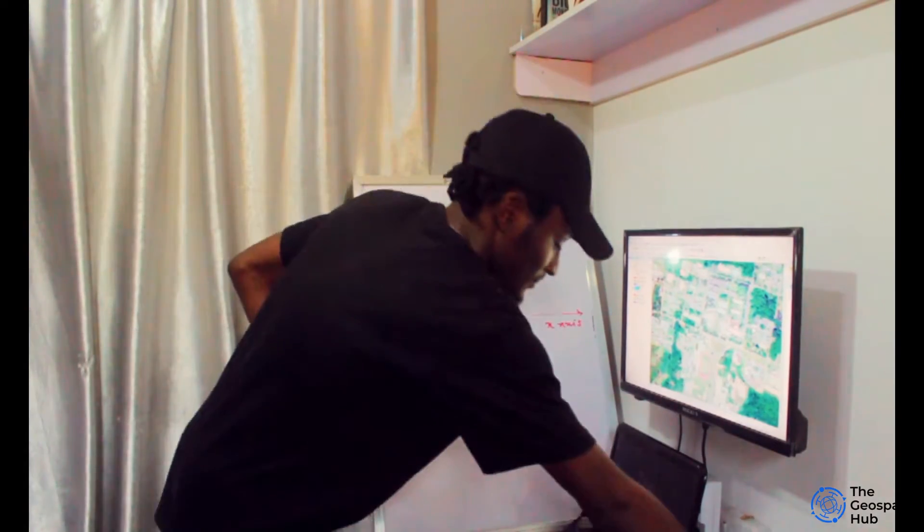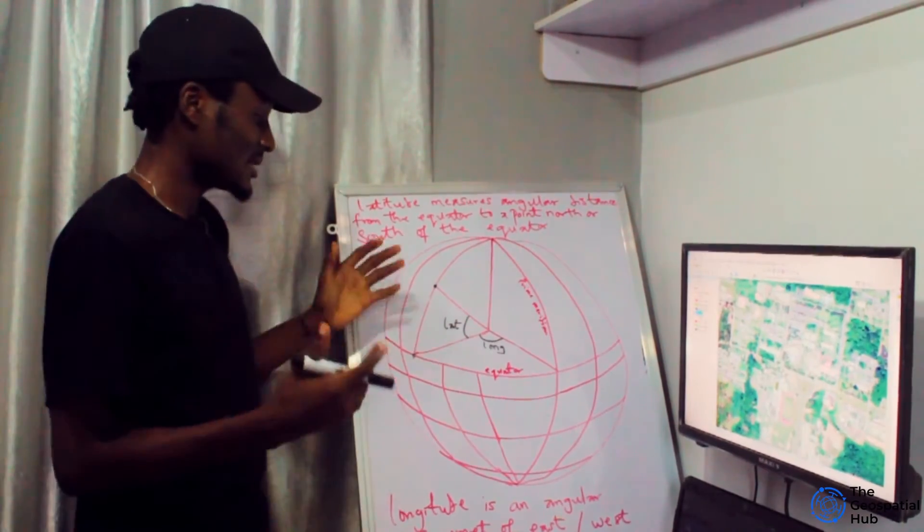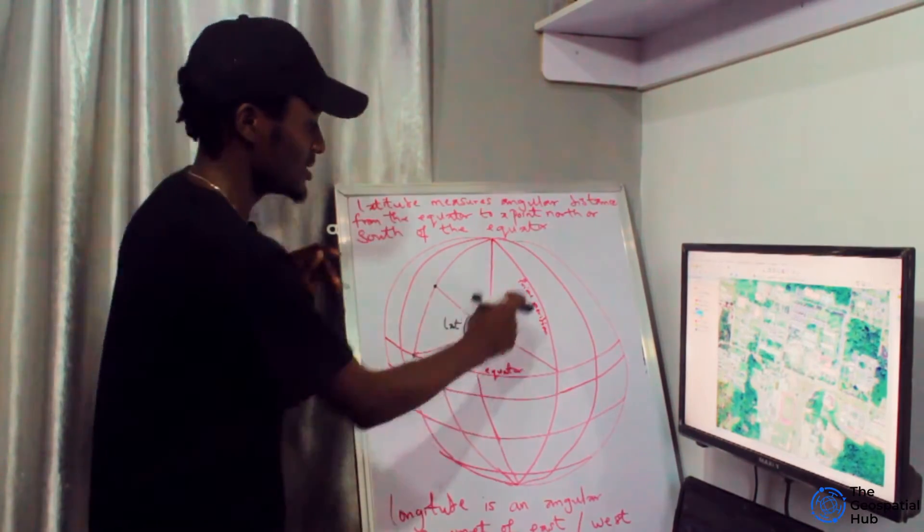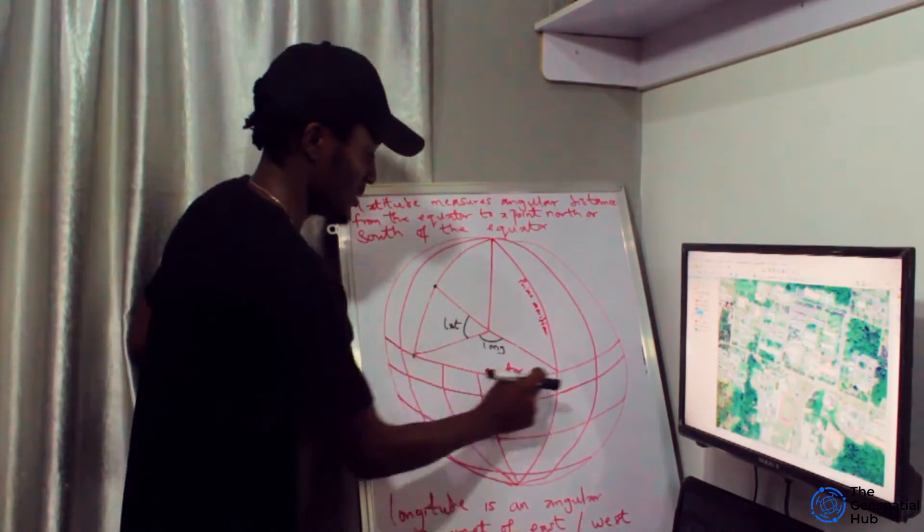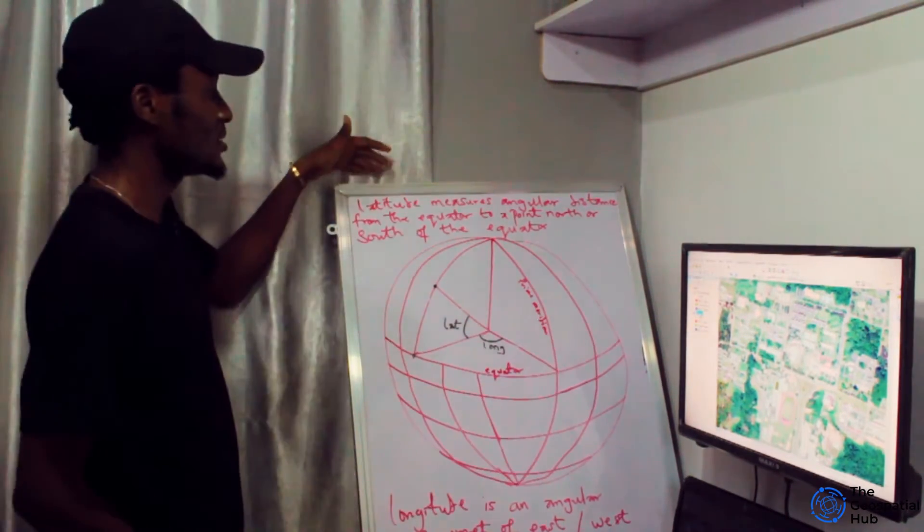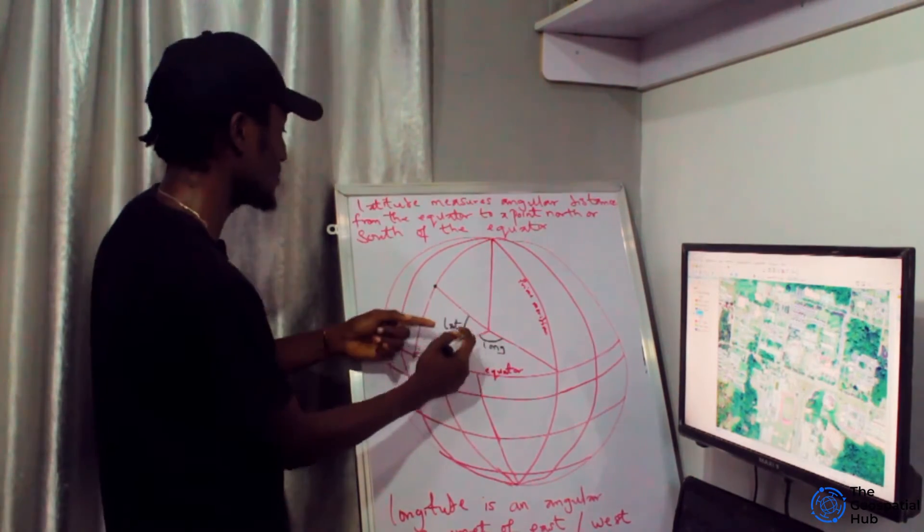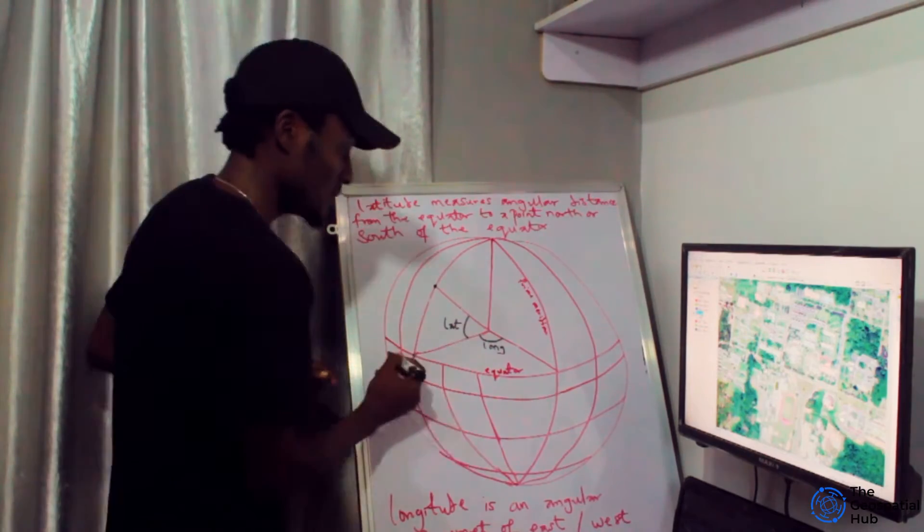To help folks understand better, I made this sketch - please pardon my drawing. This is the prime meridian and this is the equator. Latitude measures angular distance from the equator.